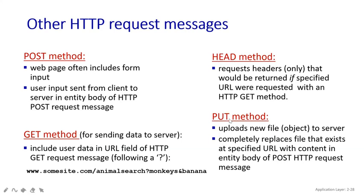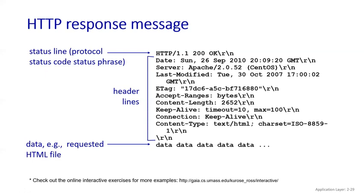The PUT method is used to upload a new file or object to the server — you write PUT, then slash, then the file name, and it puts the file directly inside the server. Another function of PUT is to completely replace the file that exists at a specified URL with the content in the entity body of the HTTP POST request message. You can also write the URL name and it will take all contents from that URL and put them directly to the server.